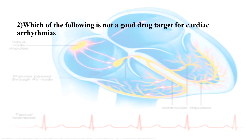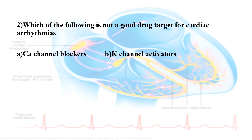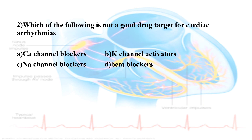Second question: Which of the following is not a good drug target for cardiac arrhythmia? Options are: Option A, calcium channel blockers; Option B, potassium channel activators; Option C, sodium channel blockers; Option D, beta blockers. The correct answer is potassium channel activators.